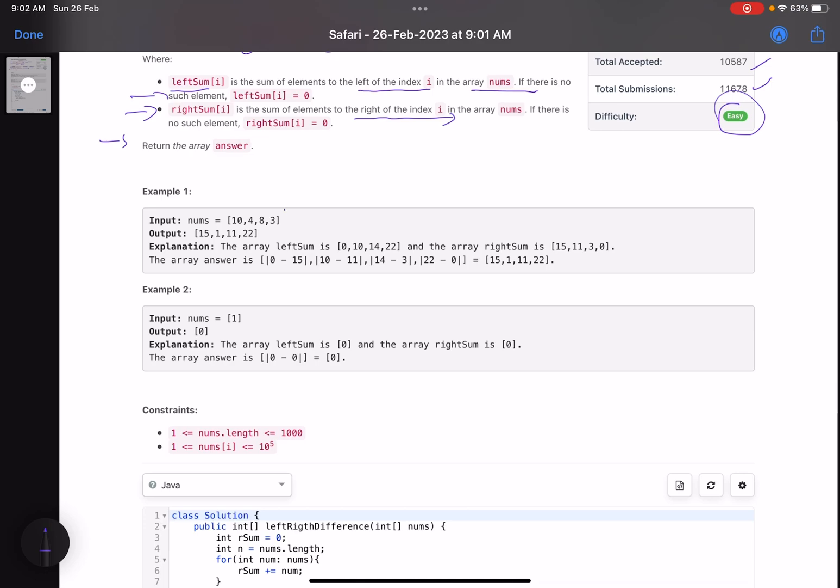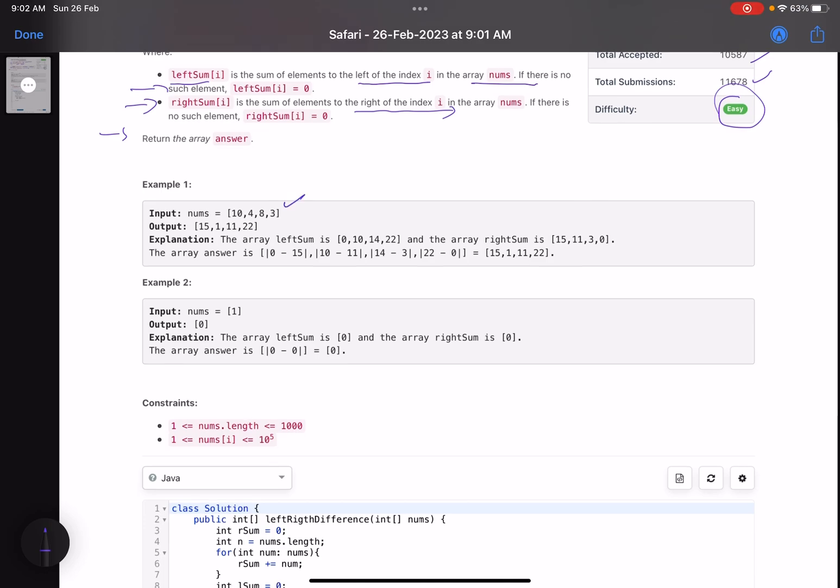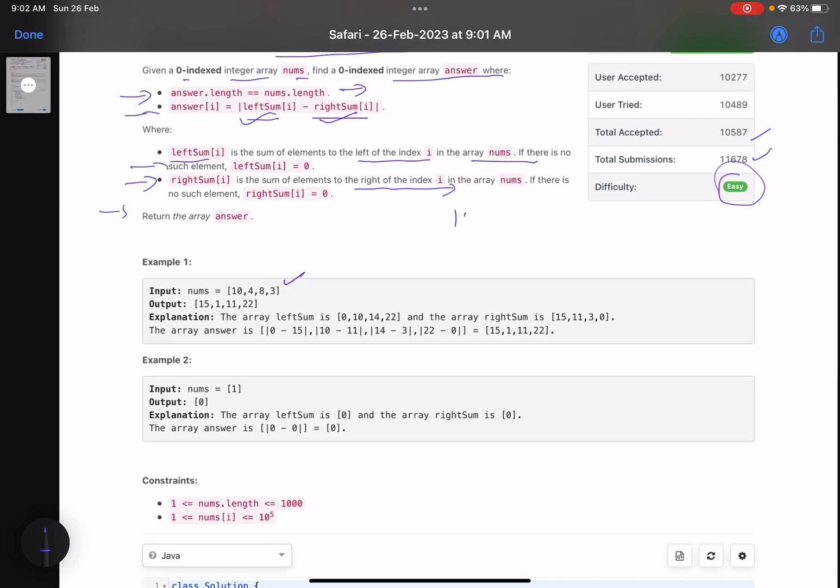So in short, what is it trying to say? Suppose this is my array. So my array is 10, 4, 8, and 3. I need to return another array of this size only. And what are the values here? So just see, I am at this index. I want to calculate the first index of the answer array. What I'll do? Now, what is the left sum for this position? There is no left element here, so the left sum is zero.